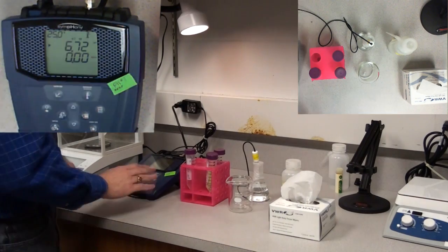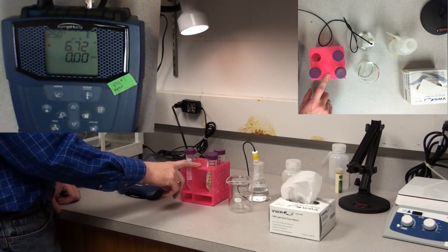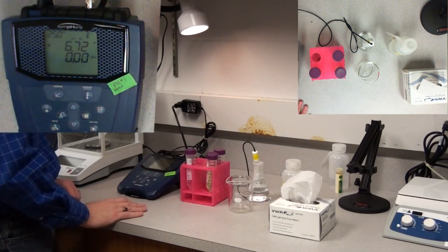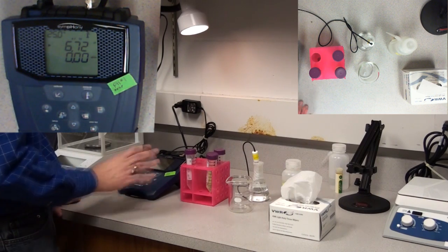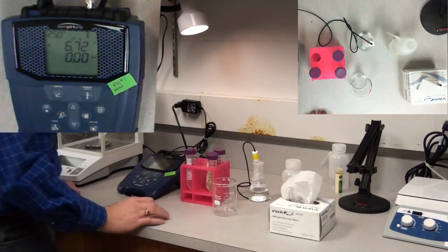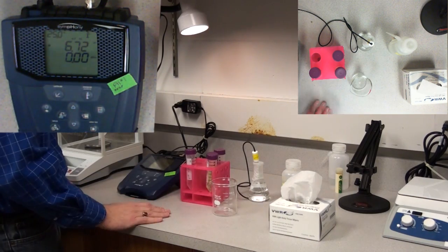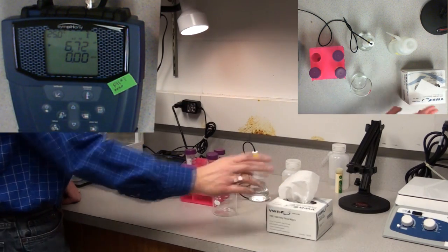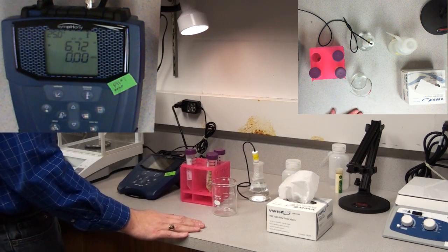Okay, I'm going to calibrate the pH meter. What I've done is I've taken my standard solutions and placed them in 50 ml conicals just for ease of use. I have a waste beaker for when I rinse off my probe in between the buffers, and then I have some laboratory tissues, in this case a VWR brand.